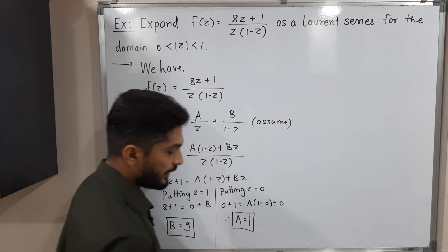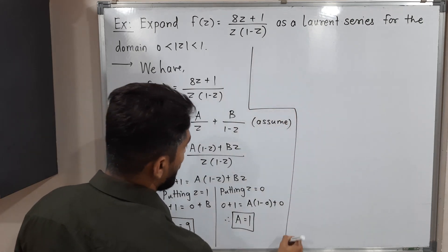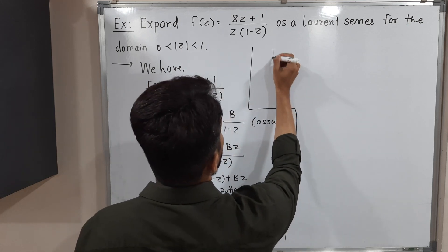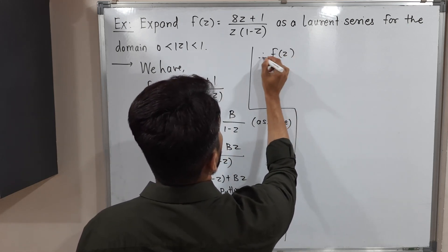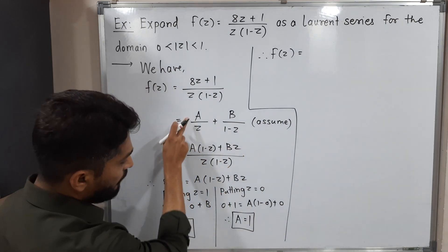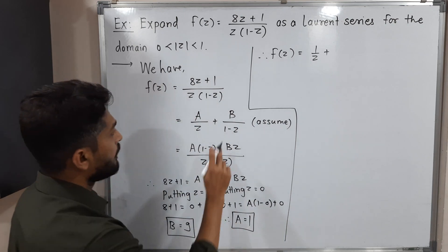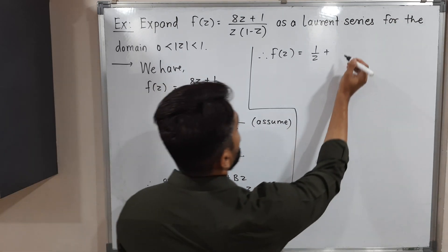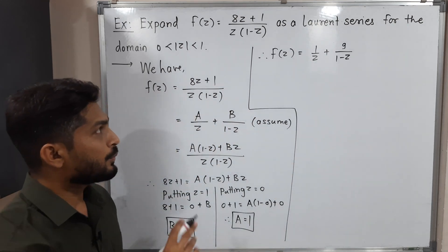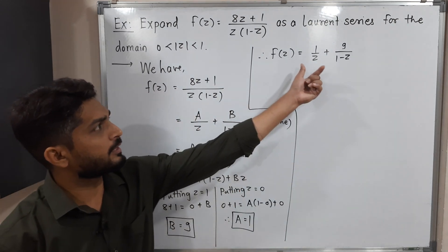Therefore the given function f(z) can be expressed as: f(z) = 1/z + 9/(1 - z). We have separated the terms and now need to express this as a Laurent series.